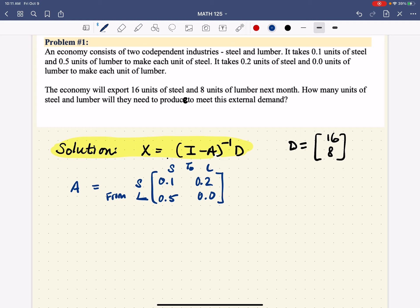So we know that our solution, X, is identity minus A inverse times D. Okay, so we can do this by hand if we want to. In fact, I will just to illustrate that it can be done. It's a little tedious. And then we'll go right to the technology.